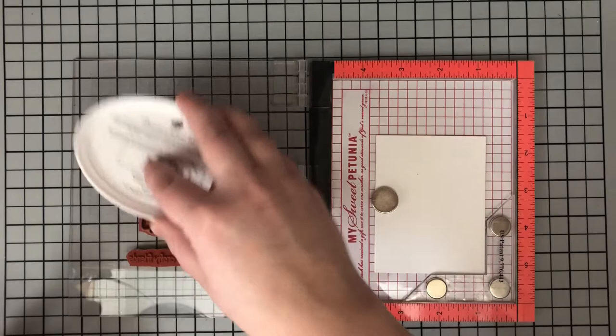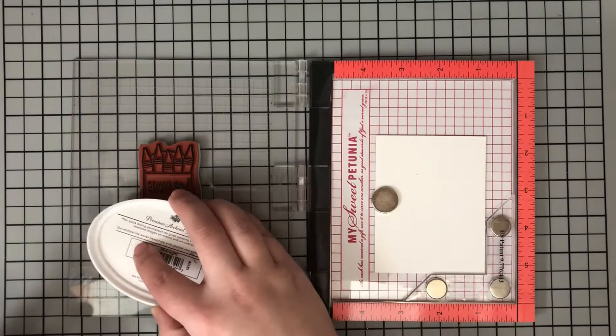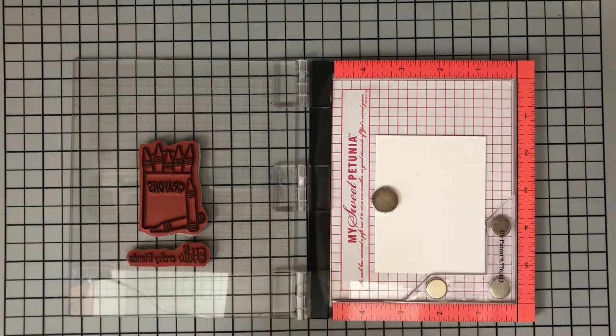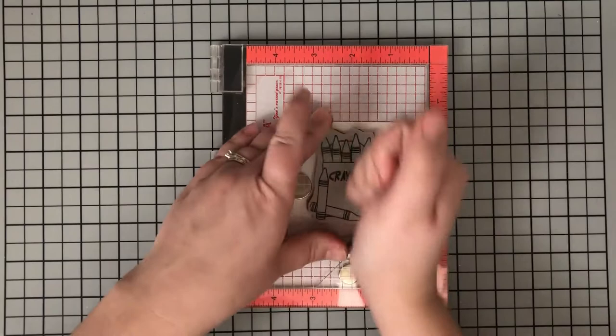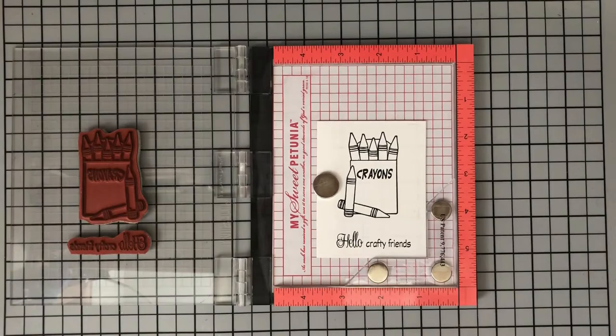I'm using the Midnight ink from Catherine Pooler. This works really well with all different coloring mediums, and I'm going to be using my alcohol markers to color this in today, so that's why I'm using this. It also stamps beautifully so you can use it just for regular stamping. I'm going to stamp this down, make sure I give it some really good pressure and get a nice impression, and then it's on to coloring.